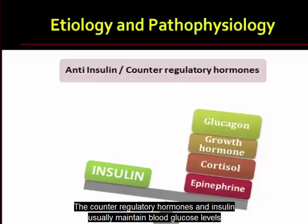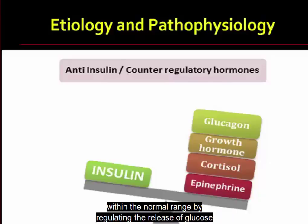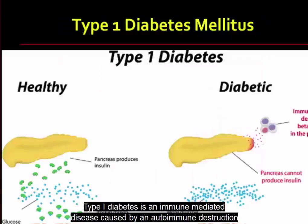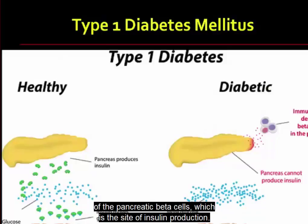The counter-regulatory hormones and insulin usually maintain blood glucose levels within the normal range by regulating the release of glucose for energy during food intake and periods of fasting. Type 1 diabetes is an immune-mediated disease caused by an autoimmune destruction of the pancreatic beta cells, which is the site of insulin production.